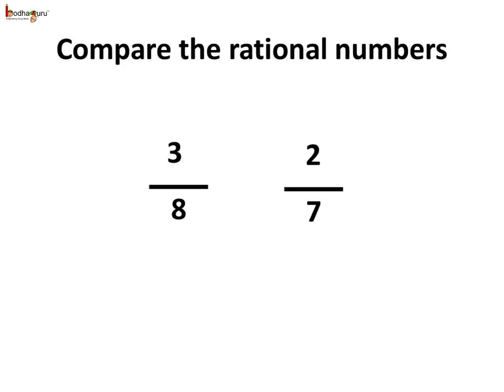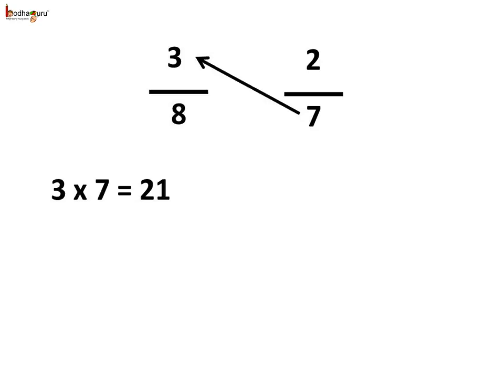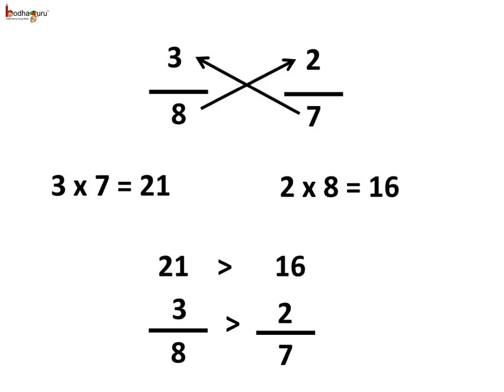Now let us compare the rational numbers 3 by 8 and 2 by 7. Let us do the cross multiplication — multiply the numerator of the first rational number by the denominator of the second rational number. So 3 multiplied by 7 is equal to 21. Next, multiply the numerator of the second rational number by the denominator of the first: 2 multiplied by 8 gives 16. We see 21 is greater than 16, which means 3 by 8 is greater than 2 by 7. Thus we use the property of cross multiplication to compare the two rational numbers.